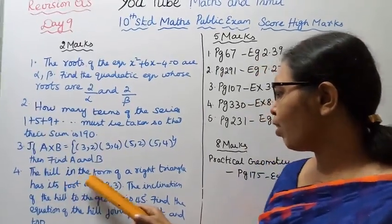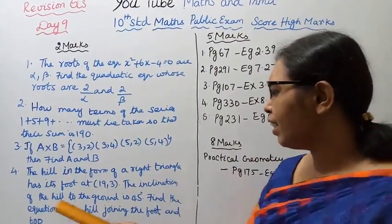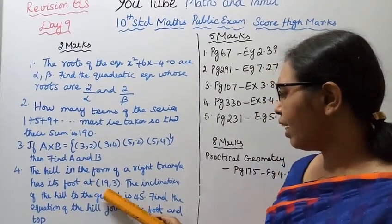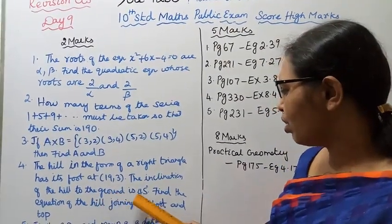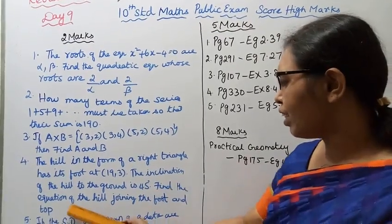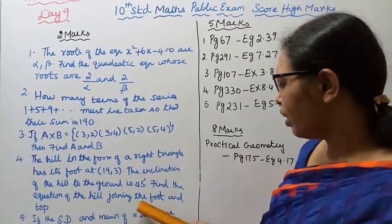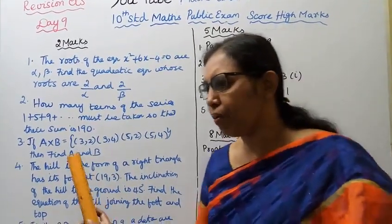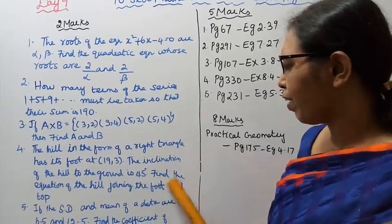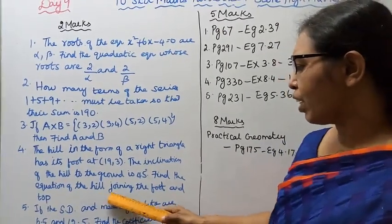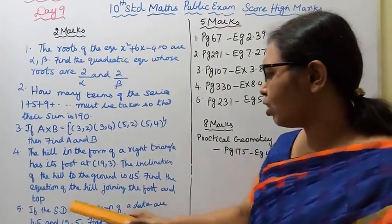Fourth, the hill in the form of a right triangle has its foot at 19, 3. The inclination of the hill to the ground is 45 degrees. Find the equation of the hill joining the foot and the top. If you see the trigonometry question, but this is coordinate geometry. Find the equation of the hill joining the foot and the top.